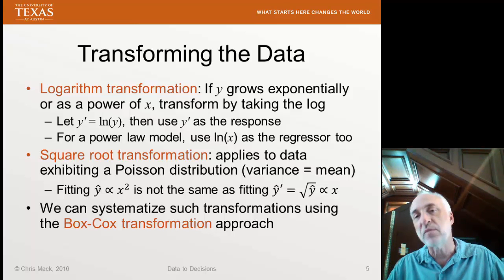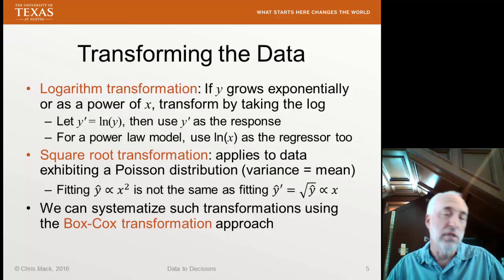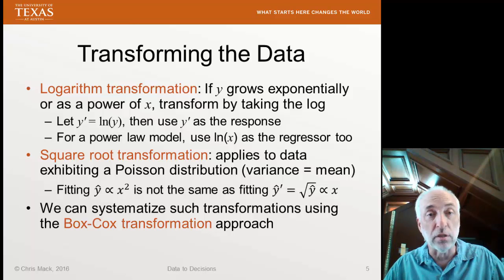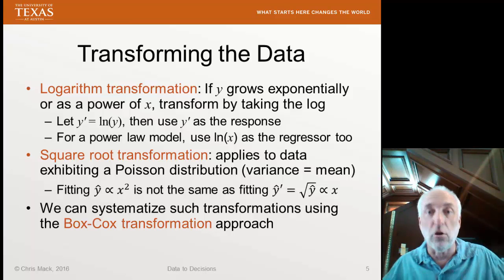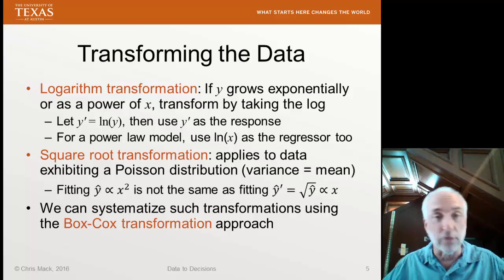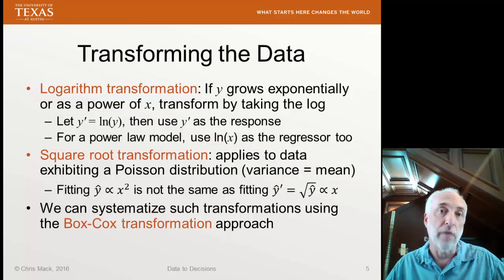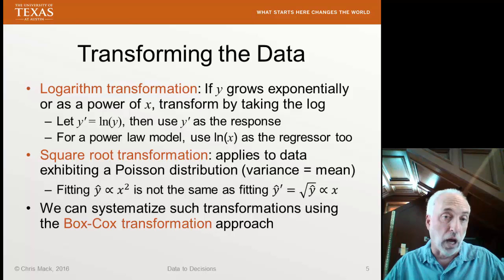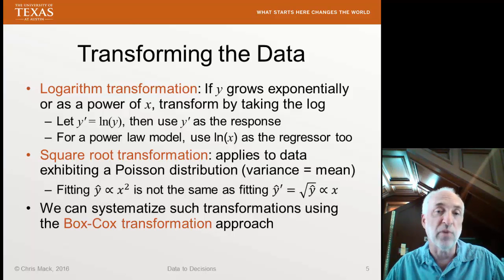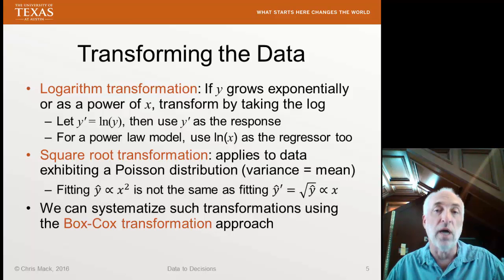Transforming the data is popular, especially in the exploratory phases of looking at our data. The two most common transforms are the logarithm transformation and the square root transformation. Especially if we've got an exponential model, you might think about taking the log of the entire equation and then fitting the log of y versus a linear model in x. If I have a power law model — y goes as x to some power — I could use the log of both y and x and fit it to a straight line. Sometimes processes have a Poisson distribution where the variance equals the mean; in that case, taking the square root of y has a tendency to stabilize that variance.